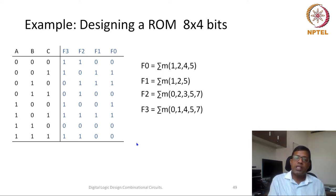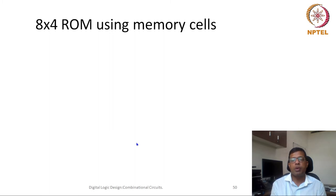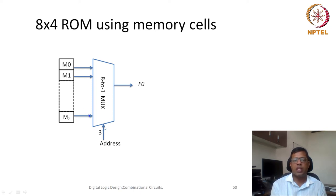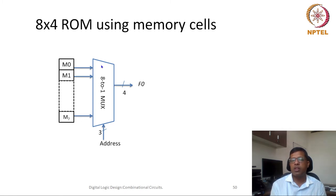It is not always the case that we design ROM using basic circuits. There is also a possibility of using memory cells. Let's say we have memory cells where the content at all addresses 0 through 7 is stored; we can then access it using a multiplexer. The output of each memory cell is given to a multiplexer and the 3-bit address A, B, C controls it, giving output F0. Similarly, we can have memory cells for F1, F2, F3. The total number of memory cells would be 32, and corresponding memory cells go to 4 different multiplexers giving 4 outputs F0, F1, F2 and F3.